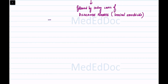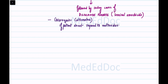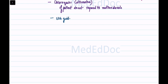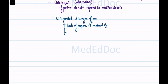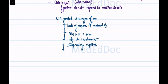Chloroquine can be used as an alternative treatment if the patient does not respond to metronidazole. Indications for performing ultrasound-guided drainage of pus include lack of response to medical treatment, abscess size larger than 5 cm, left lobe involvement, impending rupture, pregnant patients, and secondary infection.